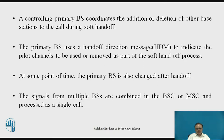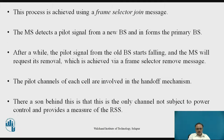The primary BS uses a handoff direction message to indicate the pilot channel to be used or removed as part of the soft handoff process. At some point, the primary BS is also changed after handoff. The signals from multiple BSs are combined in the BSC or MSC and processed in a single cell. This process is achieved by using a frame selector join message. The MS detects a pilot signal from a new base station and informs the primary BS. When the pilot signal from the old base station starts falling, the MS requests its removal via a frame selector remove message.